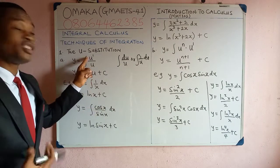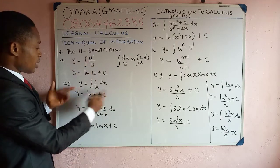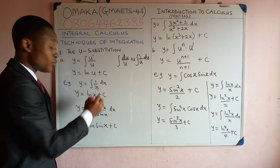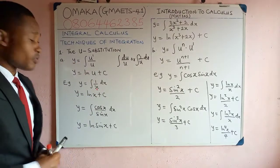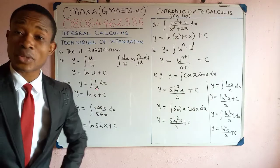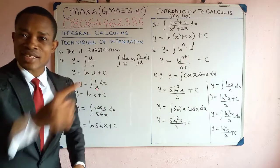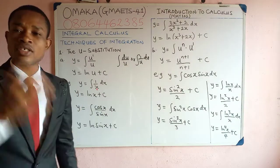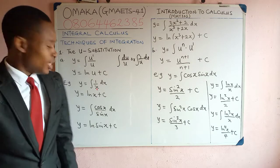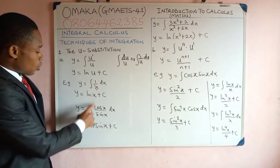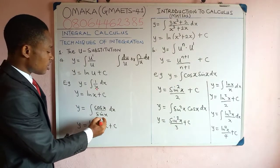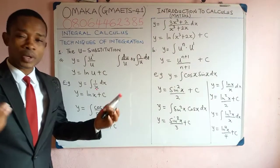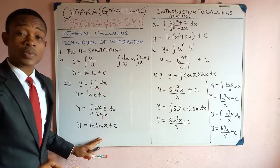This simply means: if you differentiate the denominator, you will get the numerator, then the answer of that integral is simply ln of the denominator. For example, integral of 1 over x dx — if you differentiate x, you get 1, which is the numerator. Therefore, the result is simply ln of the denominator. Another example: y equals integral of cos x over sin x. If you differentiate the denominator sin x, you get cos x, which is the numerator. Therefore, the result is ln of sin x plus c.